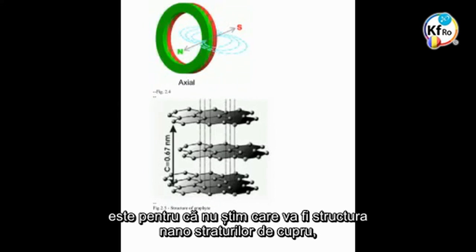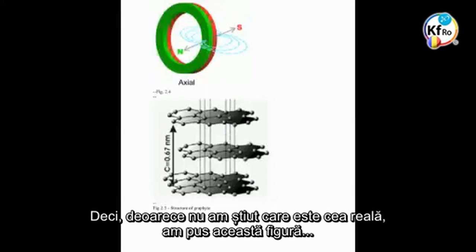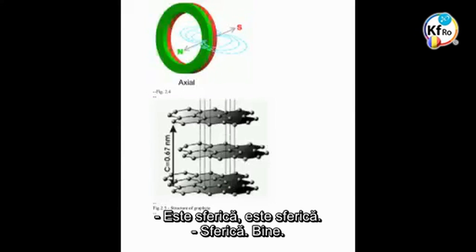I'm assuming the copper nano layers could be squares because copper's crystalline structure is cubic. Since I didn't know what the real structure is, I was putting this figure. It's spherical, okay.